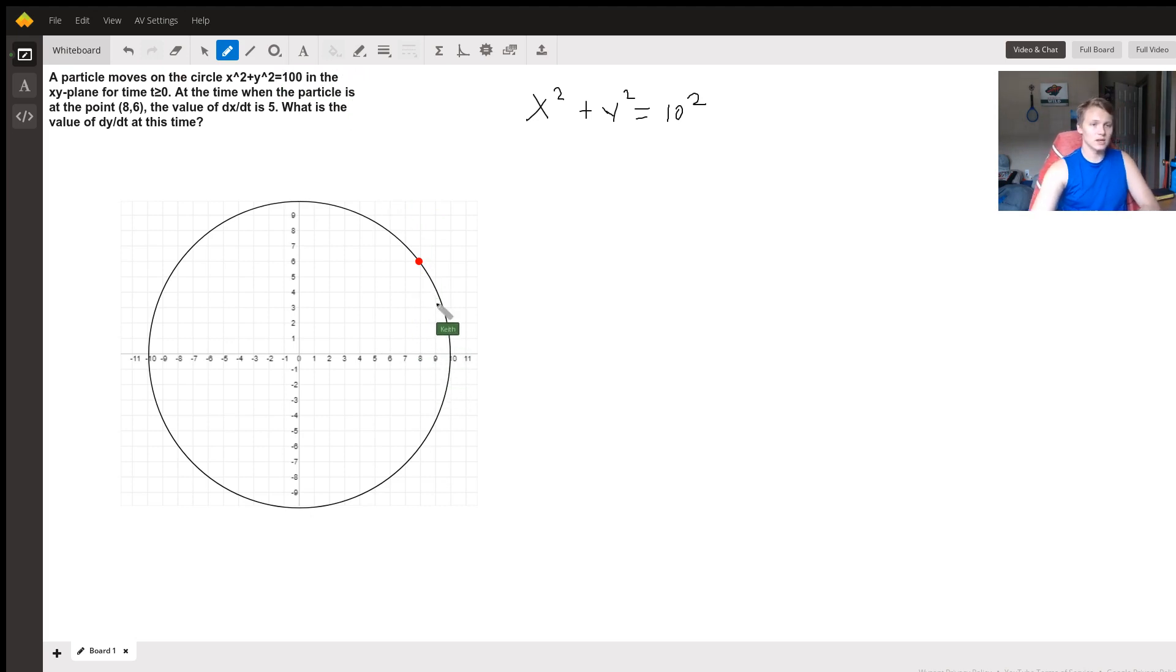And so the question says that at this point in time when the point is here, its derivative in the x direction is 5, right? So its speed at this point in time going left and right is 5. And so we want to find its speed going up and down at this time. Well, that sounds like a derivative to me.